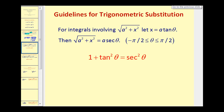The second type of integral will be in the form of the square root of a squared plus x squared. In this case, we let x equal a tangent theta. Using the identity one plus tangent squared theta equals secant squared theta, the square root of a squared plus x squared will equal a secant theta.